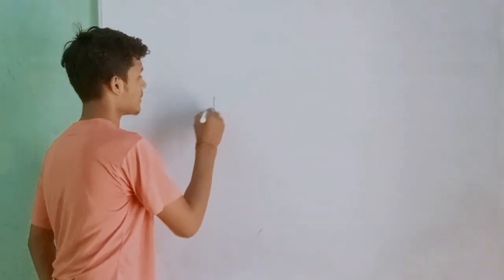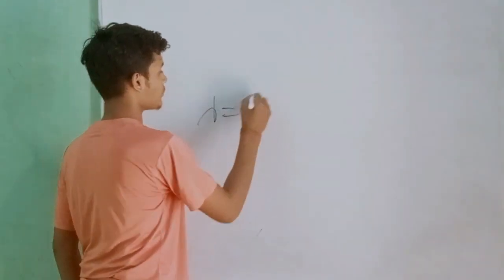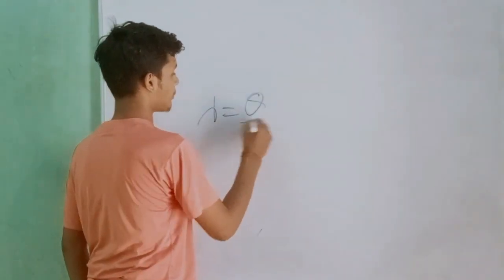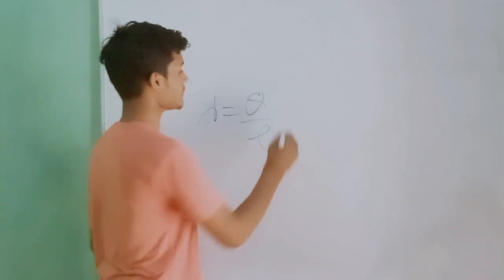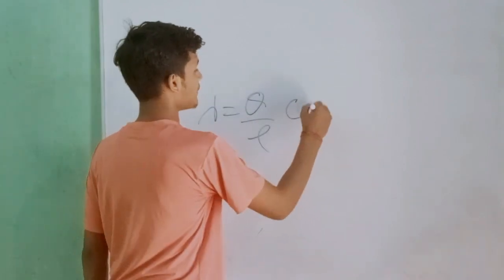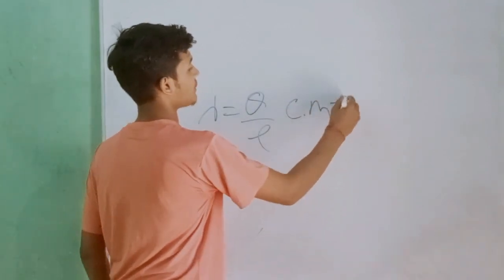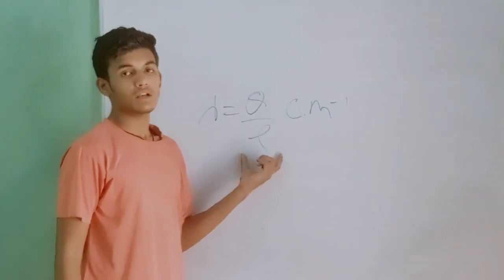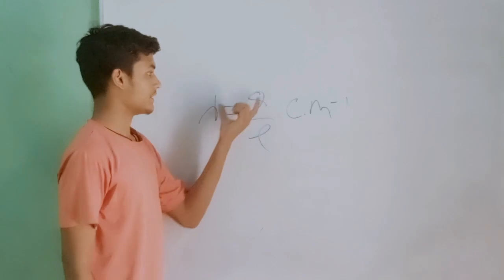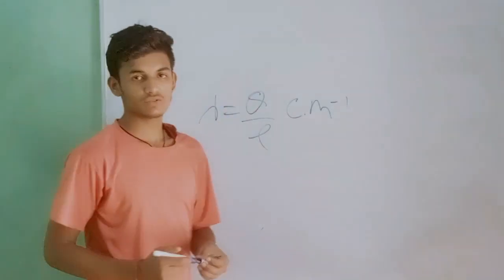The formula for linear charge density is lambda is equal to Q upon L. The unit is coulomb into meter inverse, because there is a length and there is a charge.